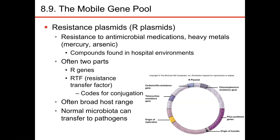Resistance plasmids are one of the most important types, medically speaking. They give bacteria resistance to certain antimicrobial medicines, as well as heavy metals and other materials found in hospital environments. They have two typical parts: the resistance genes, and a resistance transfer factor that allows them to conjugate with other cells.